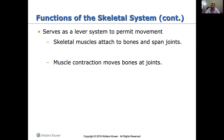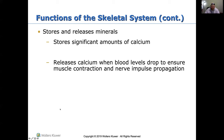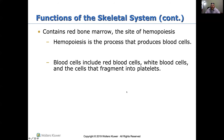Muscle contraction moves the bones at the joints. The skeletal system also stores and releases minerals — it has a lot of calcium. You think of strong bones, you think calcium, you think drink milk. If you're low in calcium, your bones are going to be affected. The skeletal system releases calcium when blood levels drop to ensure muscle contraction and nerve impulses are working properly. Red bone marrow in the skeletal system is the site of hemopoiesis — the process that produces blood cells, including red blood cells, white blood cells, and the cells that fragment into platelets for clotting.